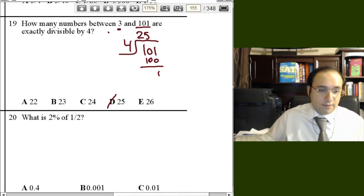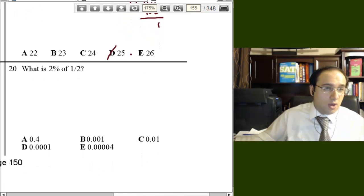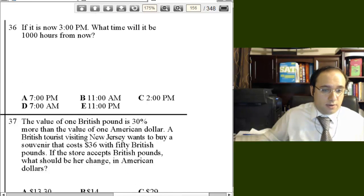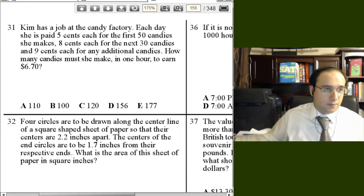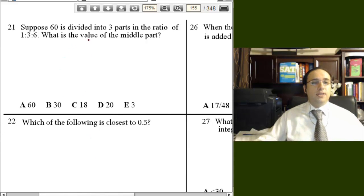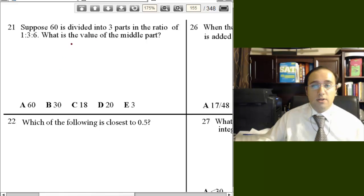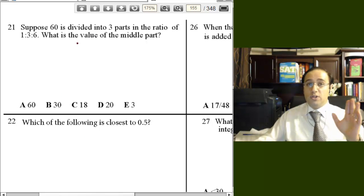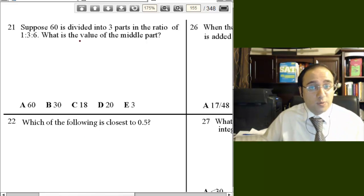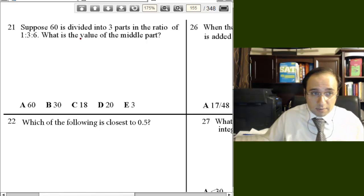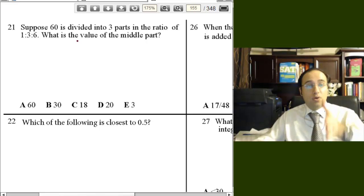Next question we have, guys, is number 21. Question 21. Suppose 60 is divided into 3 parts in the ratio of 1 to 3 to 6. Now, here's what I do. Remember when we said when we have ratios that do not involve time, we always add one more thing, which is the total. Remember that?